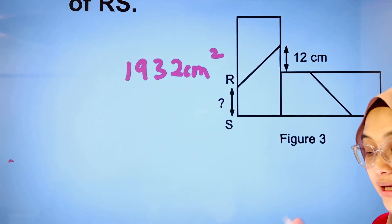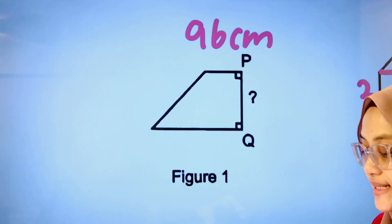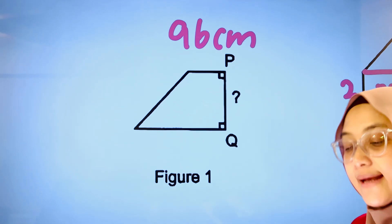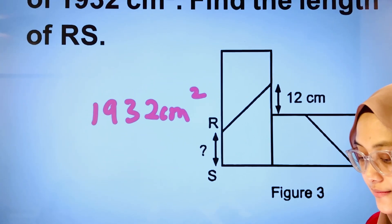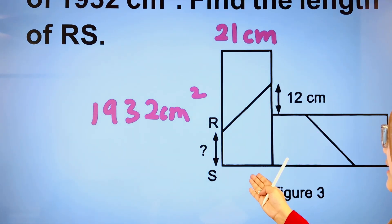Earlier, in part A, we have already calculated PQ, where PQ represents the height of the trapezium. We're going to label that on our figure 3. PQ, this is 21 cm here. That's also 21 cm here.